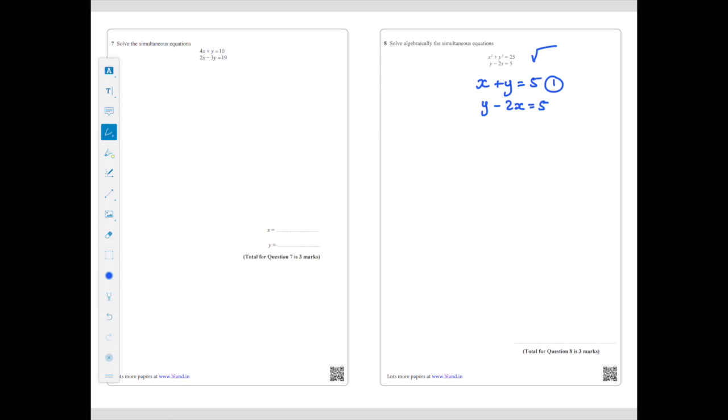Write out equation 2 underneath. And I don't like how it's written. I like to line up my X and Y's, so I'm just rearranging equation 2 so that it is similar layout to equation 1. And now that's equation 2.